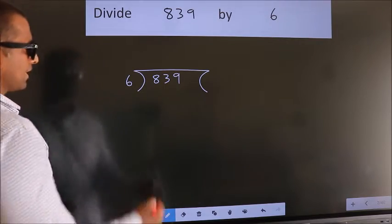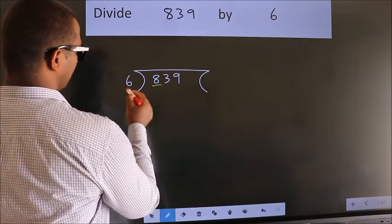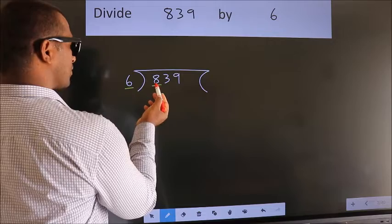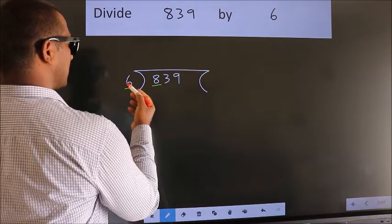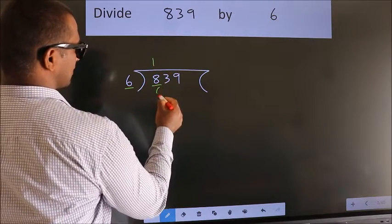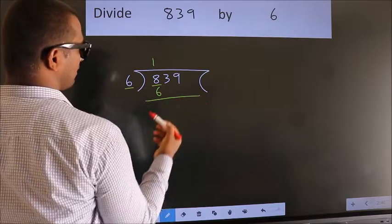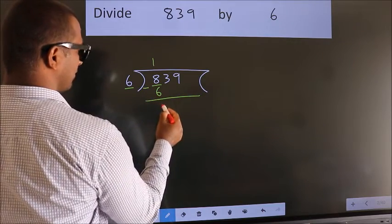Next, here we have 8, here 6. A number close to 8 in the 6 table is 6 ones 6. Now we should subtract, we get 2.